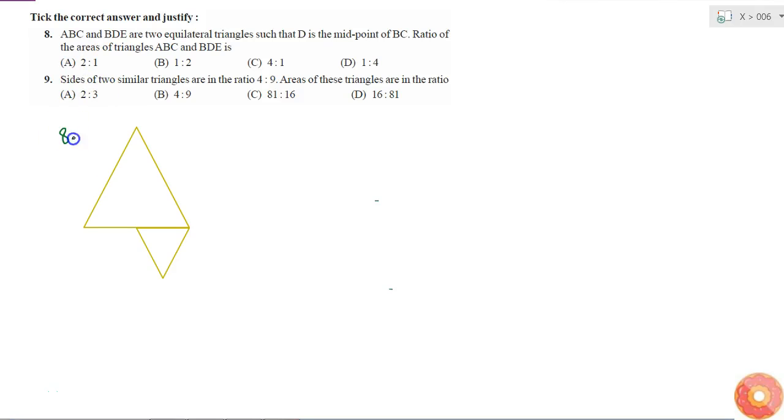In this 8th question, I am given that ABC and BDE are two equilateral triangles such that D is the midpoint of BC. So if I sketch this is my ABC, then D is the midpoint of BC and BDE is another equilateral triangle.